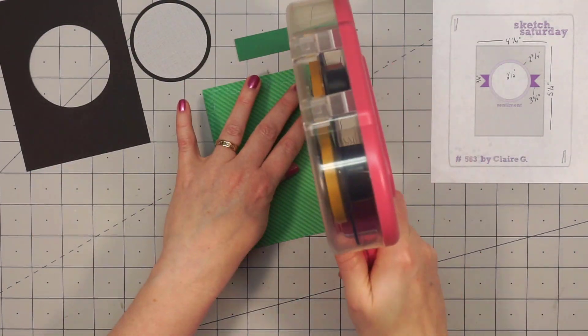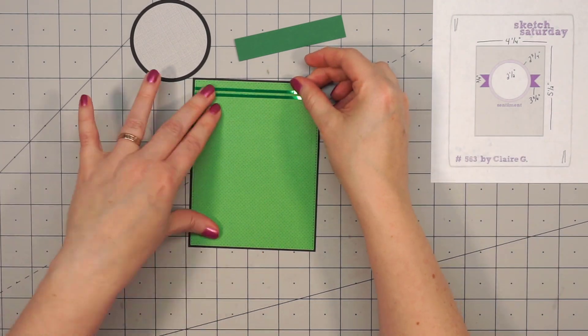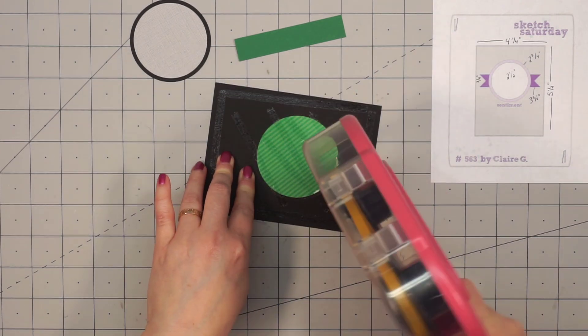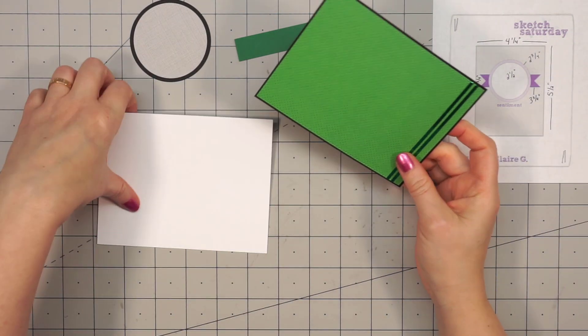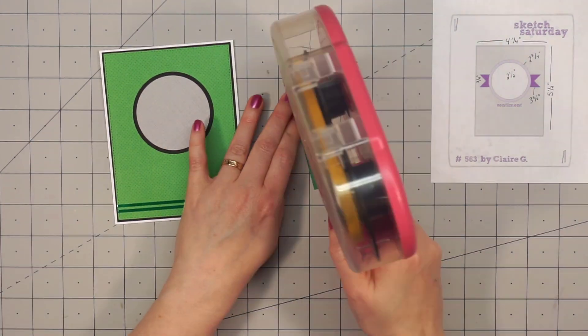So let's go ahead and add some adhesive to the back of this piece and then layer it on some simple black cardstock. And I do have a hole cut out of the back. I used the matted background paper to cut out this circle.